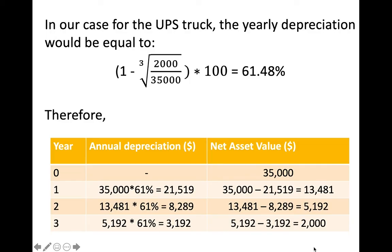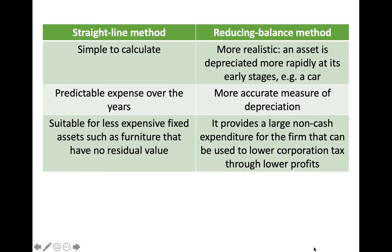Notice how the annual depreciation falls over the years, as we depreciate the asset more at the start than at the end, and therefore the net asset value also falls more at the start of its life than at the end. Eventually we dispose of the asset for the same residual value — in our case $2,000. All we have changed compared to the straight-line method is how much the asset is worth between the moment we bought it and the moment we disposed of it. From these examples, the main advantage of the straight-line method is its simplicity, while the reducing balance method is more realistic and accurate.